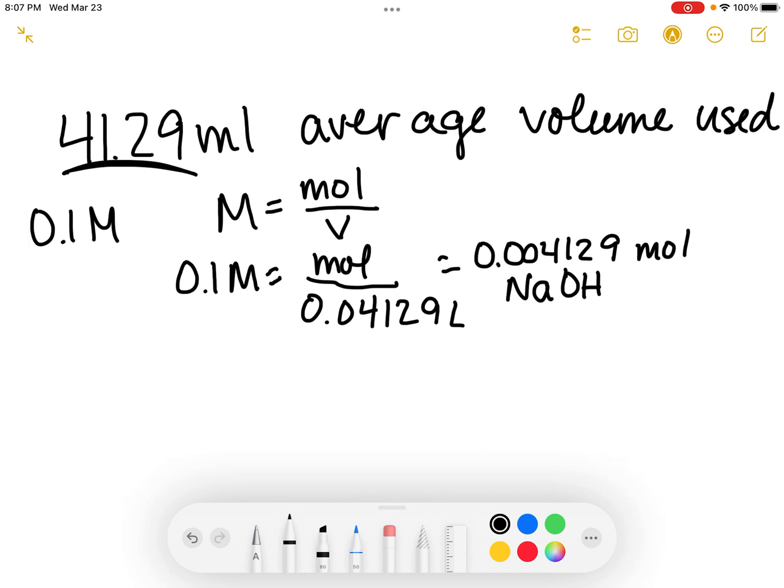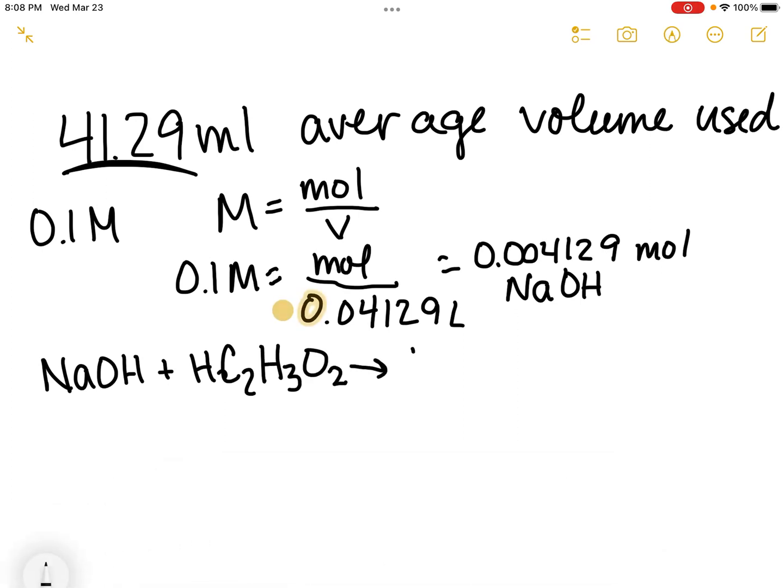Now we know how much sodium hydroxide was used during our titration. In our titration we had a one-to-one mole ratio. We have sodium hydroxide plus acetic acid HC2H3O2 gives us H2O and NaC2H3O2. This is a one-to-one mole ratio.